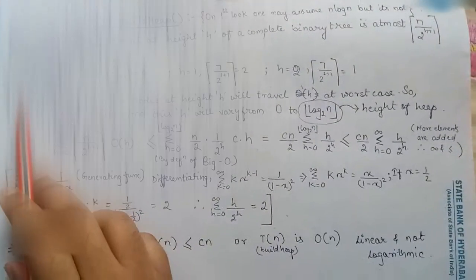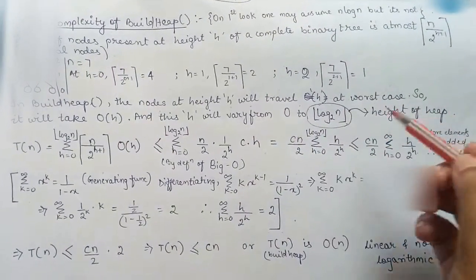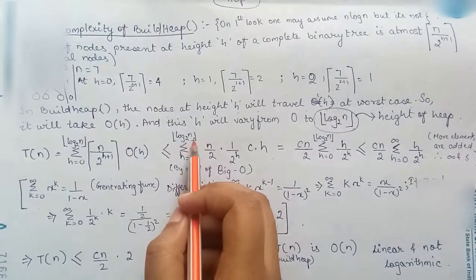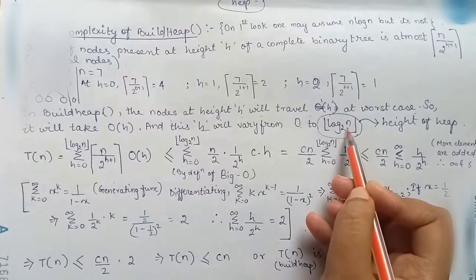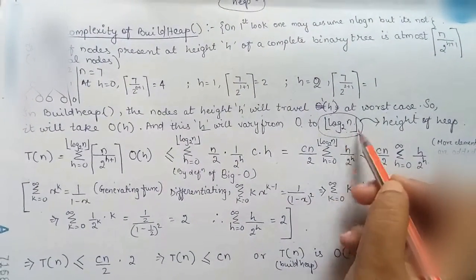Because in build heap the nodes at height h will travel h distance at worst case. So it will take big O of h and this h will vary from 0 to what is the maximum value of h? Log n base 2 floor.